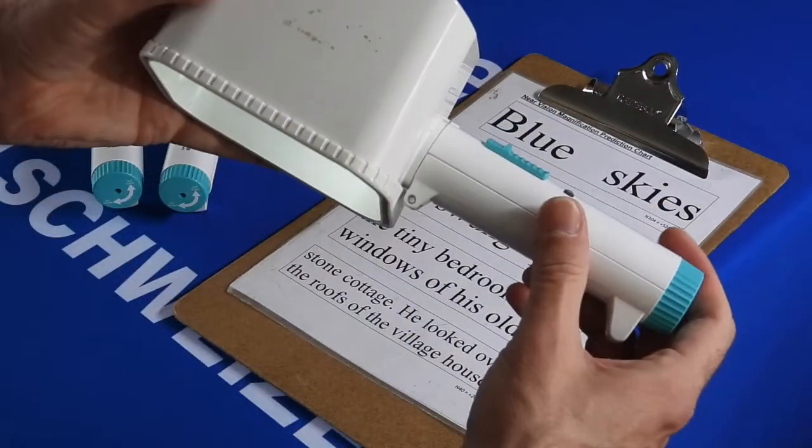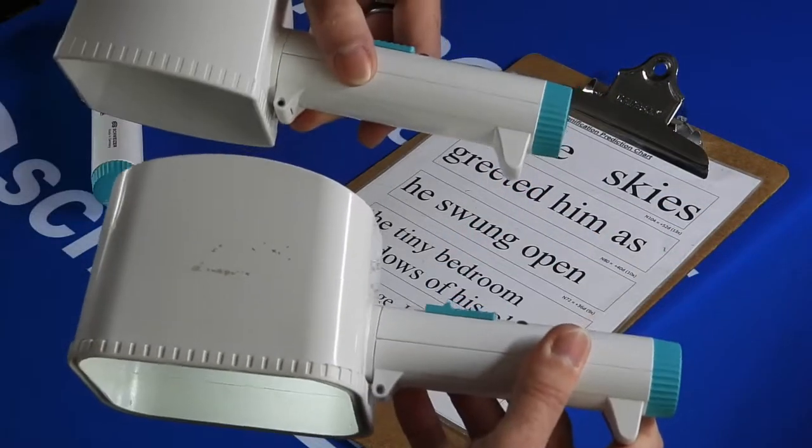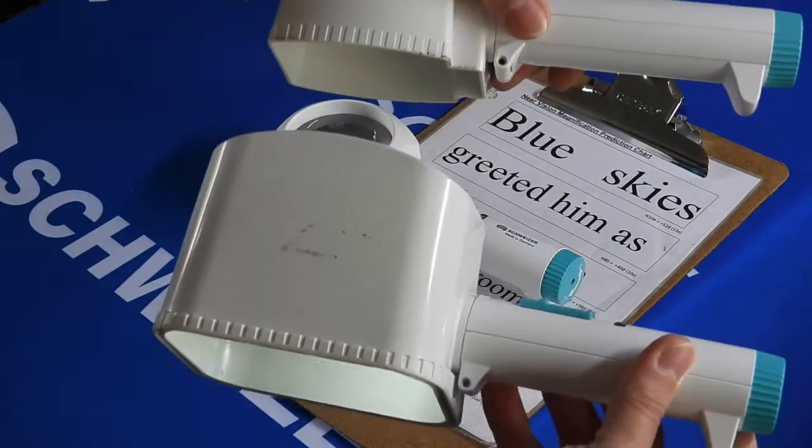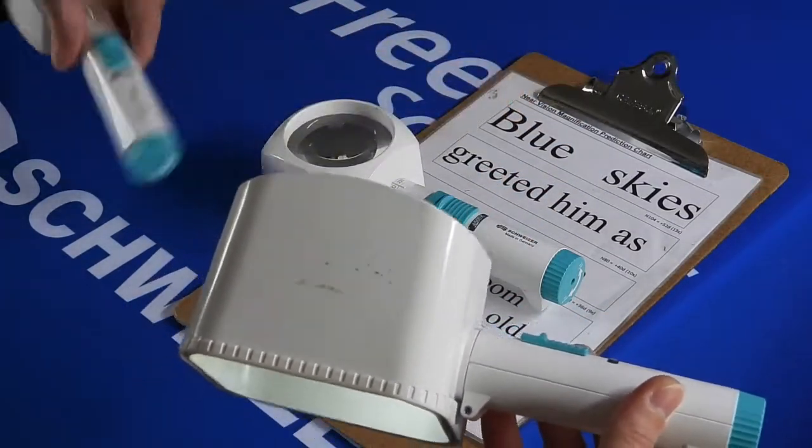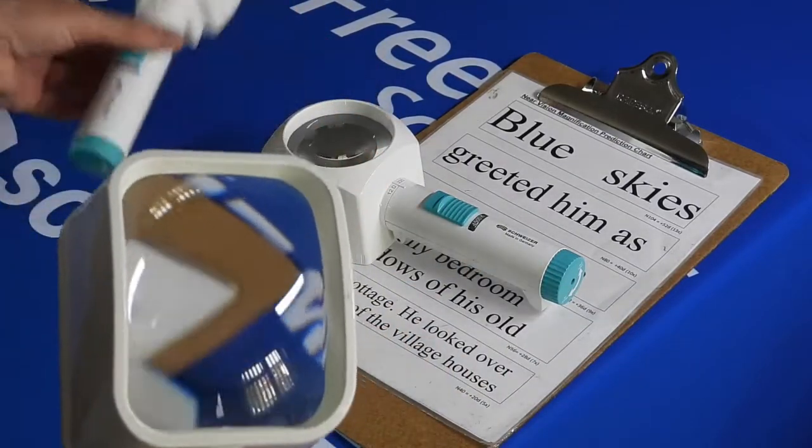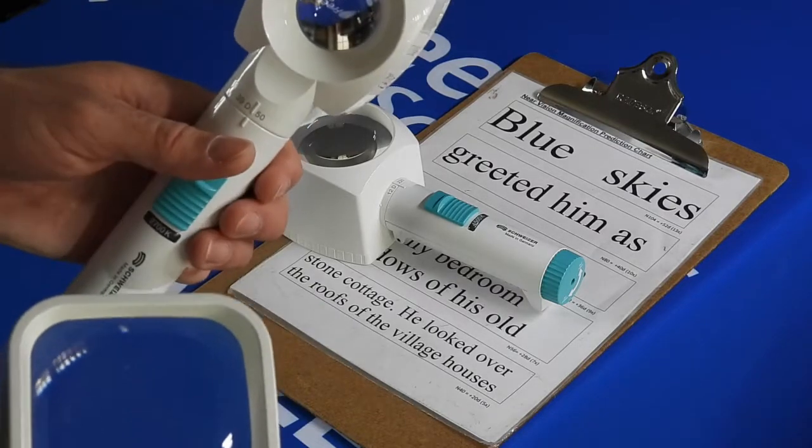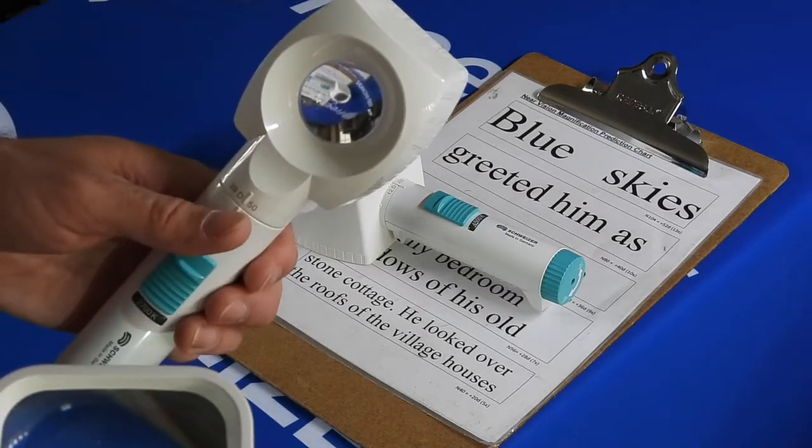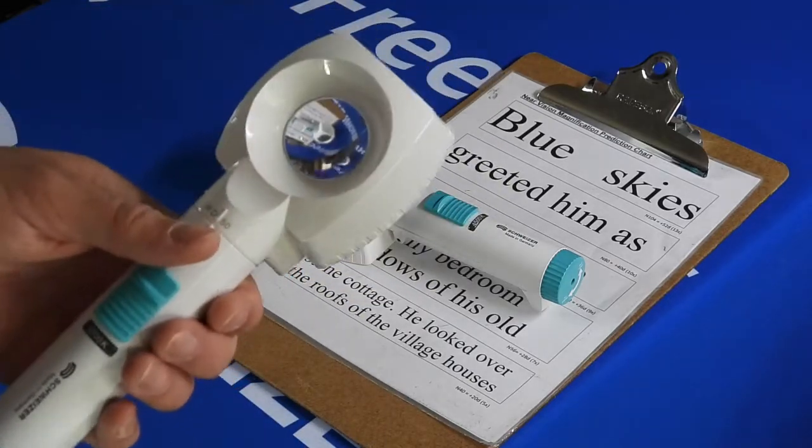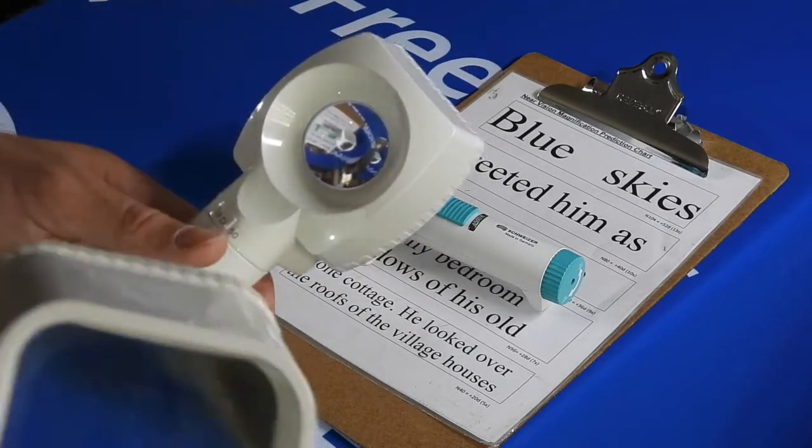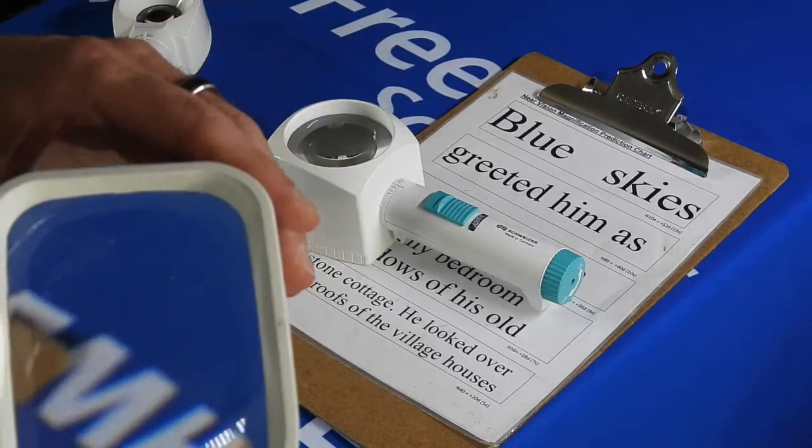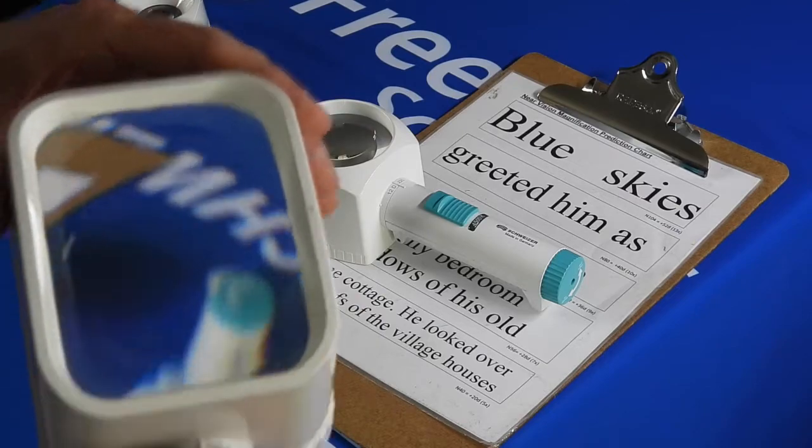You'll notice that these heads are smaller as the power increases. You may remember: the larger the lens, the less powerful it is; the smaller the lens, the more powerful it is. But the trade-off is you have to get a lot closer to the reading material with the smaller higher power ones. The larger lenses are more forgiving and have a better field of view.